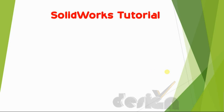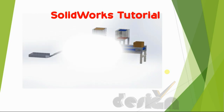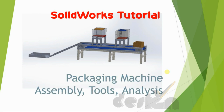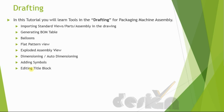Welcome to the SOLIDWORKS tutorial for Packaging Machine Assembly for different tools and analysis. The topic for this tutorial is drafting. You will learn tools for drafting in packaging machine assembly, including importing standard views, parts, or assemblies into the drawing, generating bill of materials table, balloons, flat pattern view, exploded assembly view, dimensioning, auto-dimensioning, adding weld symbols, and editing the title block. Let's start the tutorial now.